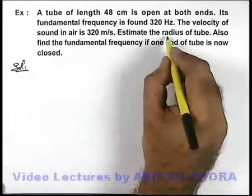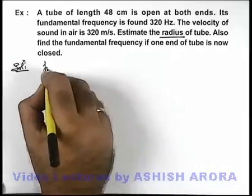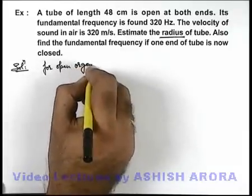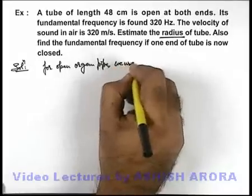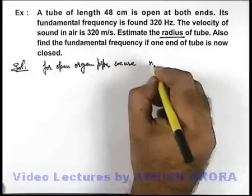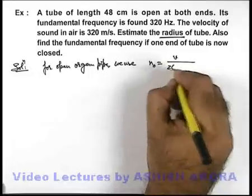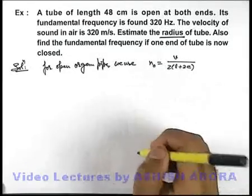Here it is asking for the radius of the tube, which means we need to account for the end correction. So we can write for an open organ pipe, the fundamental frequency we can write as v by twice of l plus 2e, where e will be the end correction.